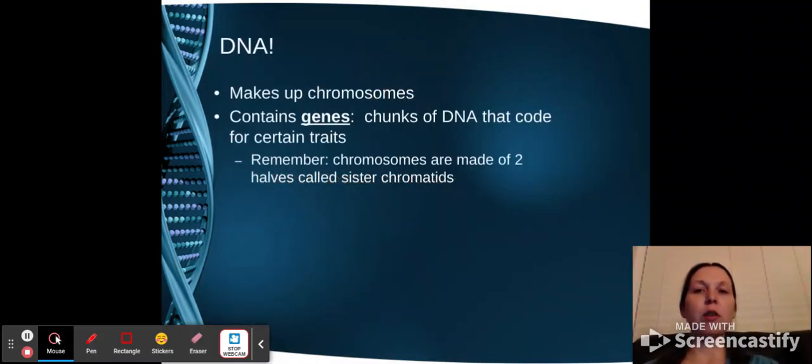So first let's just make sure we know what DNA is as a quick review. We know that it's made up of chromosomes and it contains genes which are the parts of DNA that code for certain traits that we possess. Chromosomes are made up of two halves called sister chromatids.